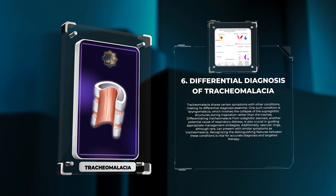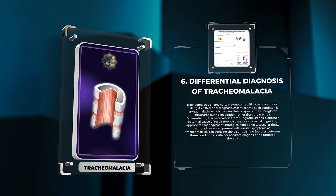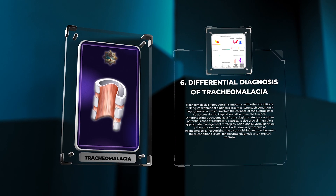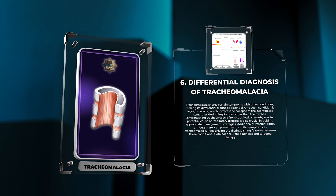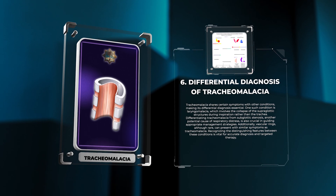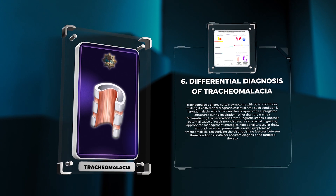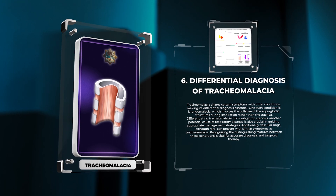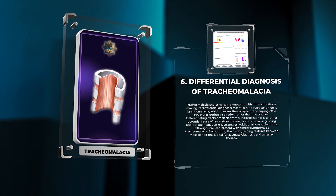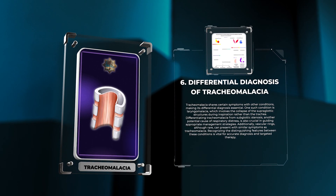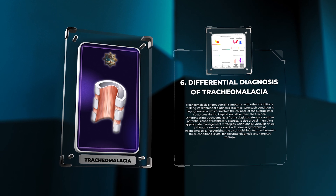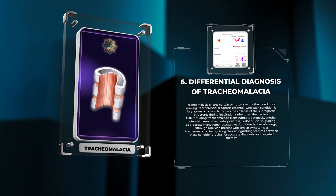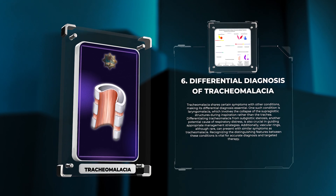Tracheomalacia shares certain symptoms with other conditions, making differential diagnosis essential. One such condition is laryngomalacia, which involves the collapse of the supraglottic structures during inspiration rather than the trachea. Differentiating tracheomalacia from subglottic stenosis, another potential cause of respiratory distress, is also crucial in guiding appropriate management strategies.